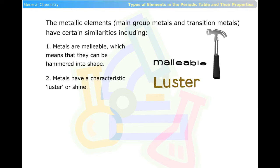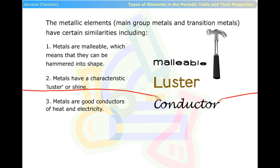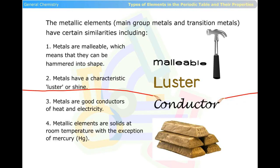Metals have a characteristic luster or shine. Metals are good conductors of heat and electricity. Metallic elements are solids at room temperature, with the exception of mercury. Metallic elements tend to lose electrons to form cations.